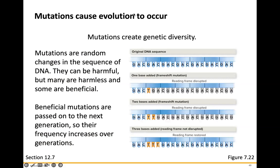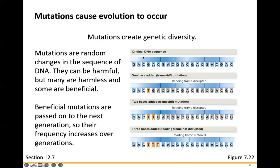Mutations are really where evolution takes its place. Mutations were one of the major causes of evolution. Essentially, mutations create genetic diversity. Mutations are random changes in the sequence of DNA — they can be harmful, but many are harmless, and actually some can be beneficial. Beneficial mutations are passed on to the next generation, so their frequency increases over the generations.